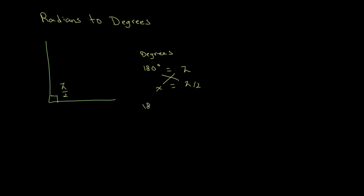So we can once again cross multiply, 180 times pi over 2 is equal to x times pi, cross out pi from both sides, and divide 180 by 2 to get 90. Therefore, pi over 2 is equal to 90 degrees.